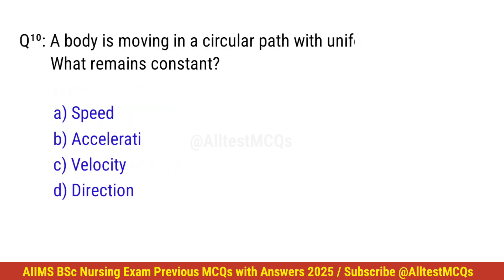Question number 10. A body is moving in a circular path with uniform speed. What remains constant? Right option is A. Speed.